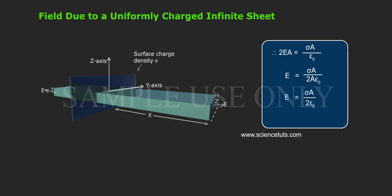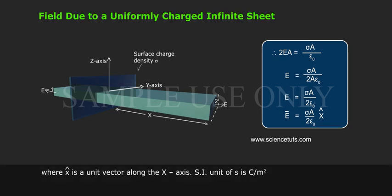E = σ/(2ε₀). E⃗ = σ/(2ε₀) X̂, where X̂ is a unit vector along the X-axis. SI unit of σ is C/m².